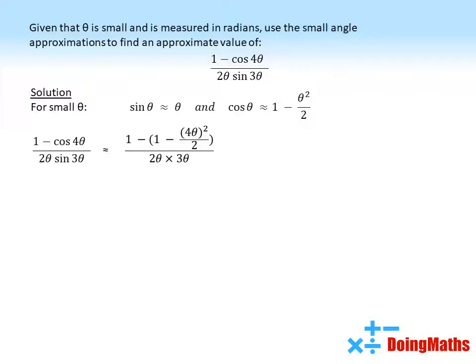Now, if we substitute these into our expression, taking into account the fact that it's cos 4 theta and it's sin 3 theta, our cos 4 theta becomes 1 minus 4 theta all squared over 2, our sin 3 theta we can replace with 3 theta, giving us this expression here.